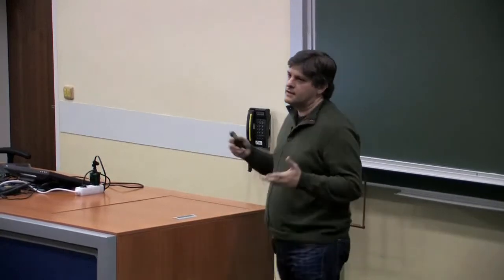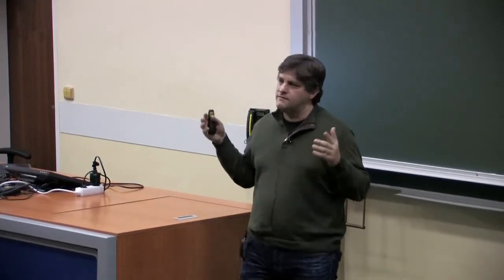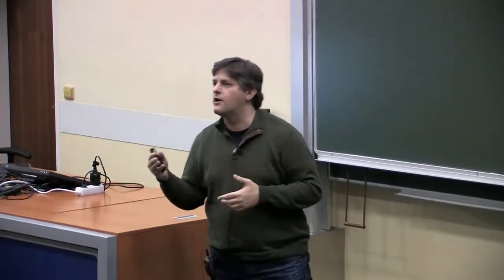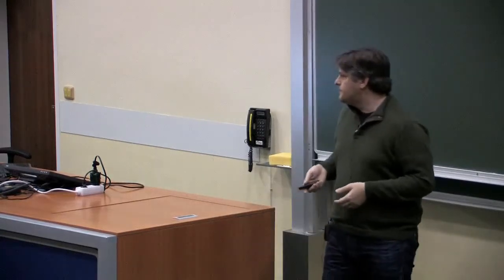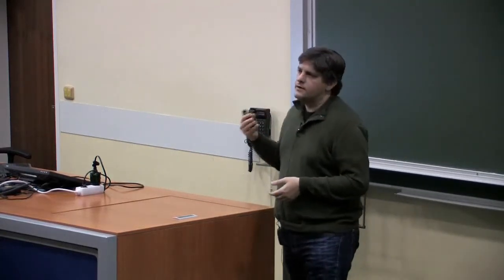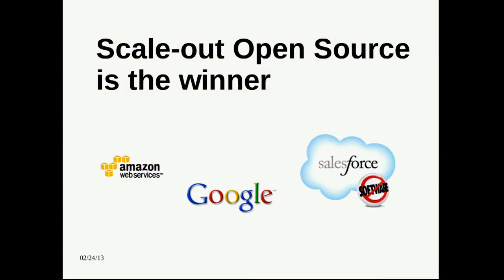Simple economics. The vectors of virtualization and automation and open source going in the same way. If you look at who have been the winners in the last 10 years, the companies that have won have been the ones that have bet their business on open source. The Googles, the Sales Forces, the Amazons, Netflix. All these guys have based their business and their development model on open source.